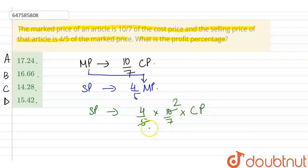Now, 5 into 10, so we get that SP is nothing but 8 by 7 times of CP, right?